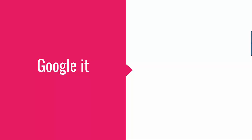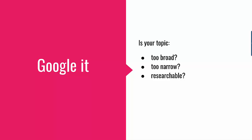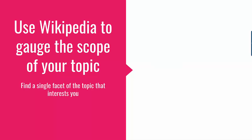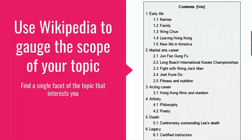Any background information you find can give you a broader perspective and help you figure out if your topic is too broad, too narrow, or whether it is even researchable to begin with. A convenient place to start is with the Wikipedia article on your topic. Wikipedia will not be a source you cite in your speech, but instead can give you an excellent overview of the size and scope of your topic. First, look at the content box — how many sections are there? You will likely want to focus your research on just one facet of your topic.